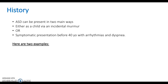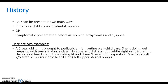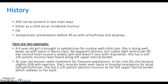Here are two examples — see if you can pick out the key buzzwords. A six-year-old girl is brought to the paediatrician for routine well-child care. She's doing well and keeps up with peers in dance class. No apparent distress, but subtle right ventricular lift. Her second heart sound is widely split and doesn't vary with respiration. She has a soft 2/6 systolic murmur, best heard along the left upper sternal border.